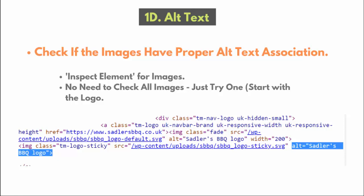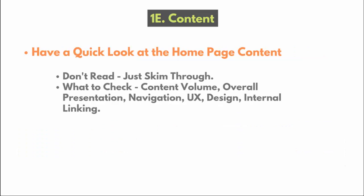Check alt text on the major images on your home page — your brand name or keywords is fine to start. For content, don't read it — just skim. First: is there any content volume? Do you have text on your home page? If not, you need some. How much? Check the competitors that are ranking and copy the exact word count — not the text itself, just the number of words.